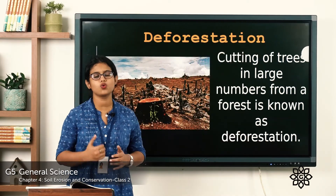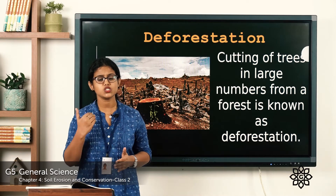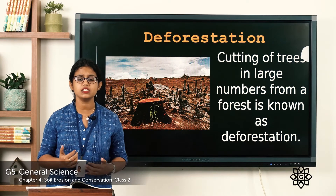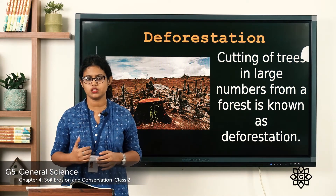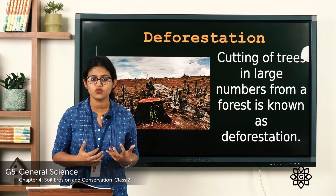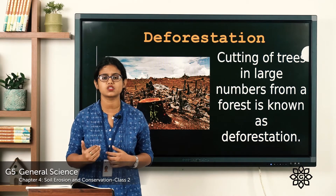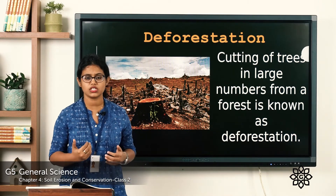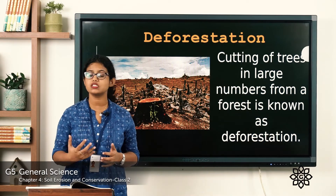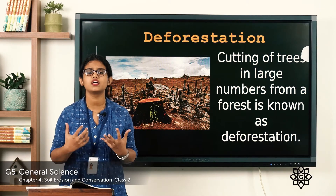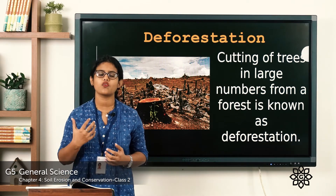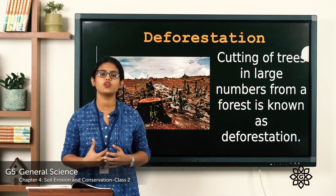Now let's learn about human causes of soil erosion. One major cause is deforestation, which means cutting down or clearing a large number of trees from a forest. The rich growth of trees reduces the force of wind and water and prevents the soil from being eroded.